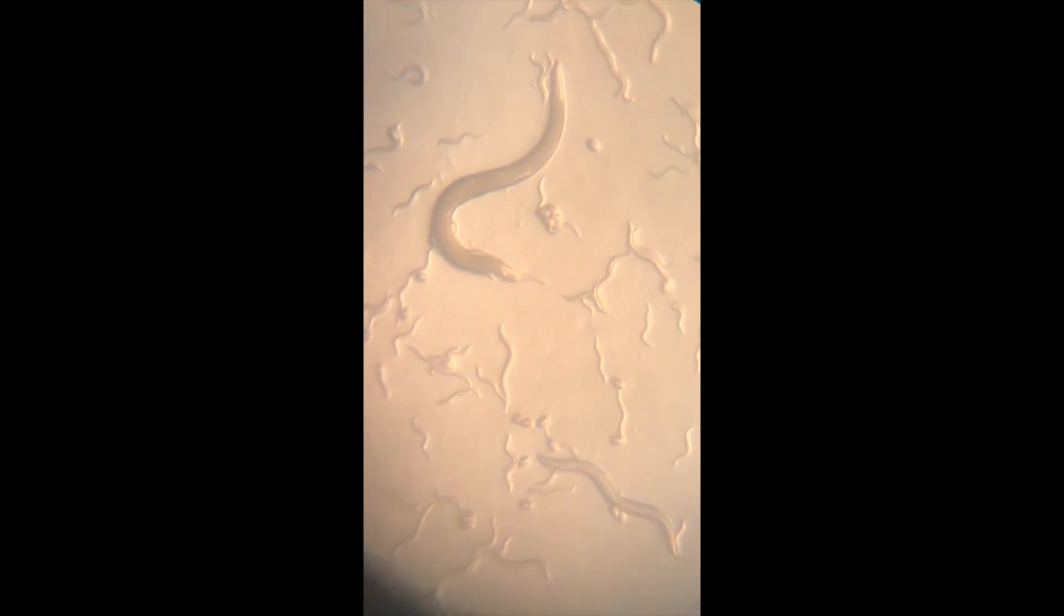Caenorhabditis elegans, or C. elegans, have become a very useful tool for RNAi interference research. The organisms are simple, have a short lifespan, and have a similar genome to humans, making them an obviously good candidate to test the technology.